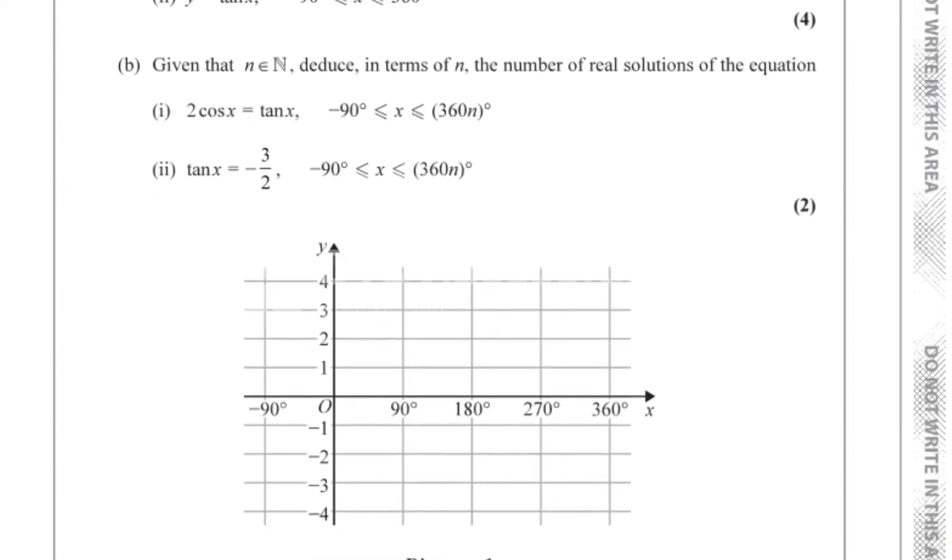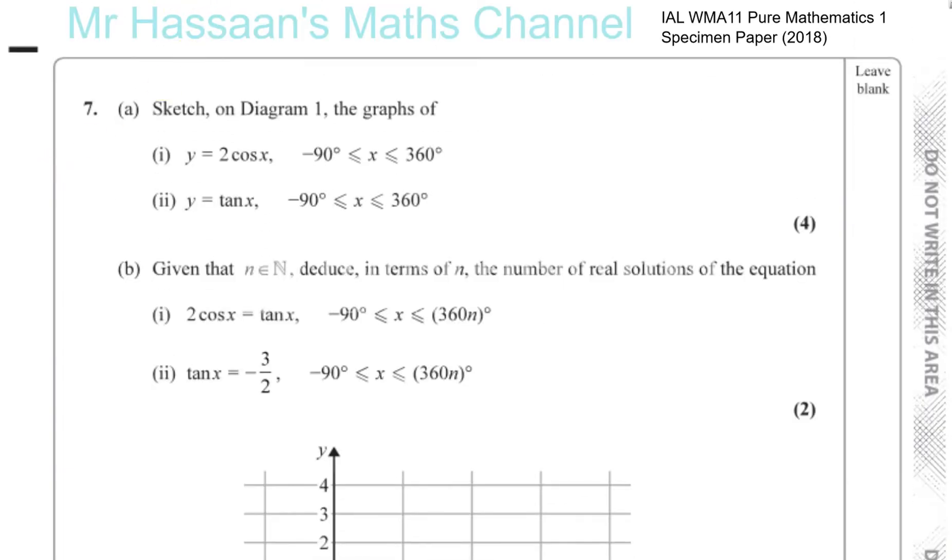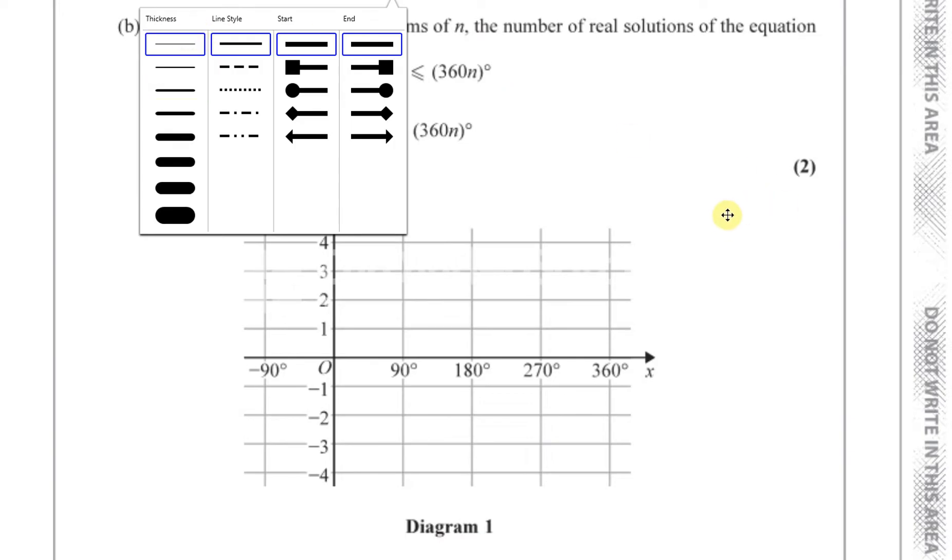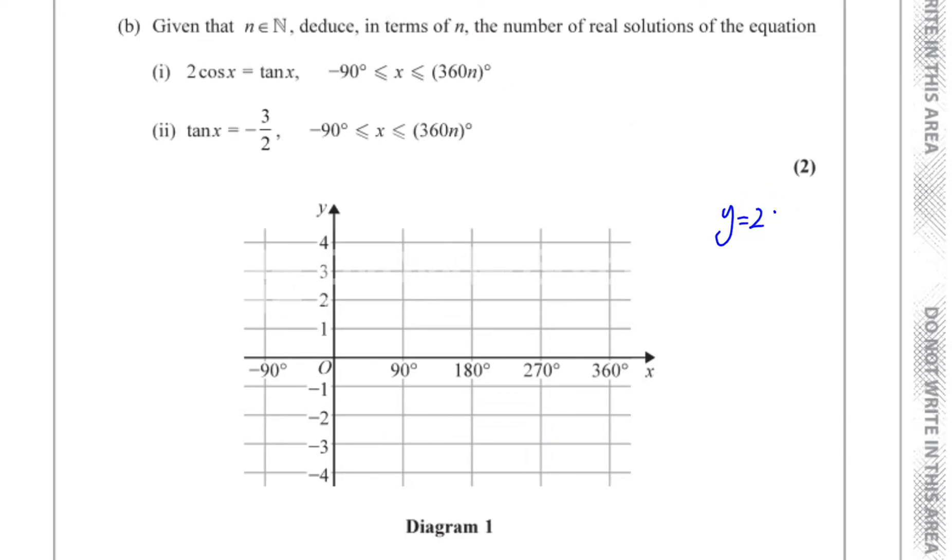The axis has been provided for us and the graphs are y equals 2 cosine x and y equals tan x between x values from minus 90 to 360 for both of them. So we've got to sketch these on the pair of axes given to us here.